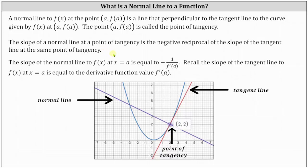For example, if the slope of the tangent line is two thirds, then the slope of the normal line at the same point of tangency is negative three halves. If the slope of the tangent line was negative two or negative two over one, then the slope of the normal line at the point of tangency would be positive one half.